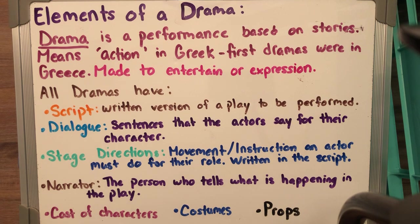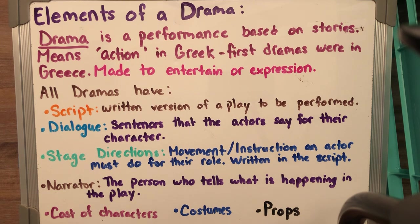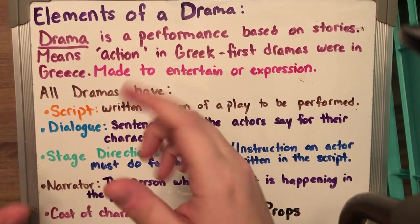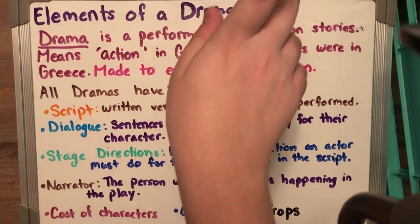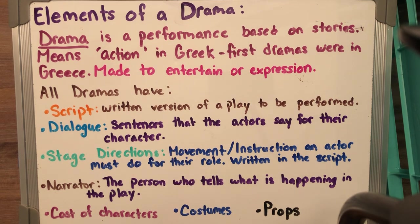Dialogue is the sentences or phrases that actors must memorize and say for their characters. A character could have only five lines, or it could have over 152 or more — the actor has to know all the dialogue for their character. There is also something called stage directions, which are the movement or instructions that an actor must follow for their role. Usually it's written in the script in parentheses. For example, it might say that Isabel should be laughing and pointing at someone across the way, so the actor knows exactly what they're supposed to be doing at that point.